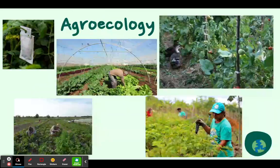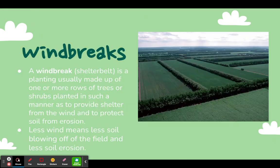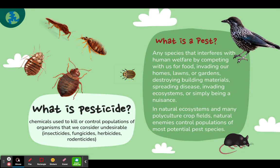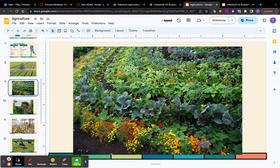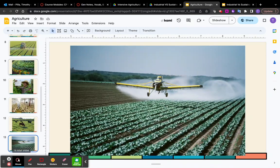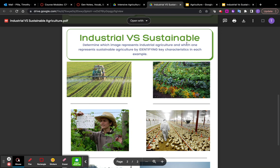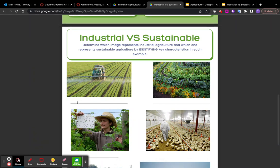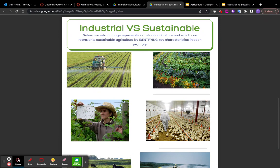We have a big difference between industrial and sustainable agriculture. Industrial uses lots of chemicals, while sustainable uses lots of natural remedies. On the note sheet, look at the pictures from the agriculture slideshow and determine whether each image represents industrial or sustainable agriculture, then tell me why. For example, this one is industrial — big machine, monoculture, spraying with pesticides or fertilizer.